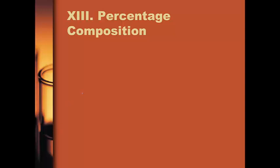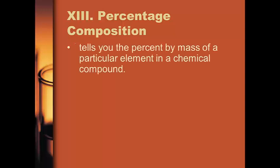You will be using a bunch of stuff that you learned earlier in terms of dimensional analysis and mole conversions. A percent composition basically tells you the percent by mass of each particular element in a compound. So if you have a compound that has elements X, Y, and Z in it, you will have three percent compositions: what is the percentage of X, what is the percentage of Y, and what is the percentage of Z?